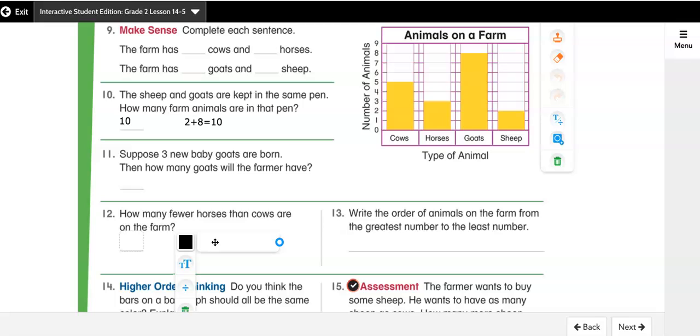I'm going to say that there are the five cows take away the three horses. Oops. And I'm going to solve five minus three equals two. So how many fewer horses than cows are on the farm? My answer is two.